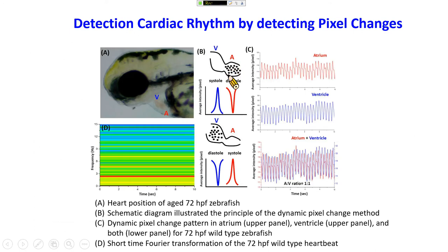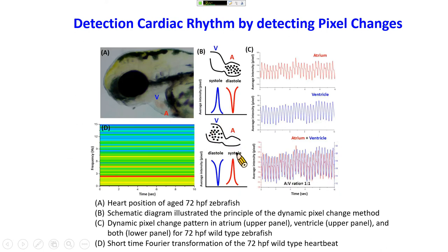The principle: blood cells in the atrium chamber block the light path, so pixel intensity goes down. At that moment, the ventricle is still empty so its pixel is high. Once the atrium contracts, blood cells pump into the ventricle, so the ventricle dynamic pixel intensity goes down and the atrium signal recovers and gets higher. Checking signals in the atrium and ventricle, you can see peaks in red and blue. Superimposing these two signals together shows the atrium and ventricle are synchronized.